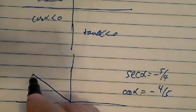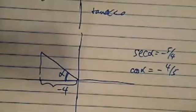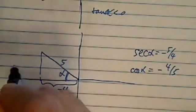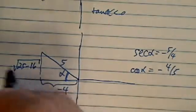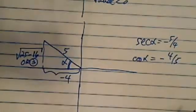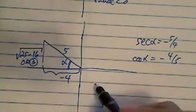In quadrant 2, if this angle is alpha, then the adjacent leg is minus 4, the hypotenuse is 5. Using the Pythagorean theorem, the opposite side is square root of 25 minus 16, or 3. Once you have this, the rest is pretty easy.